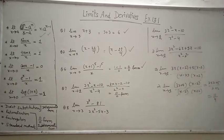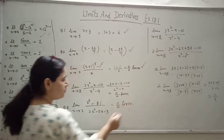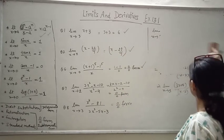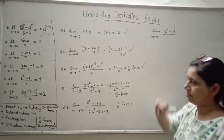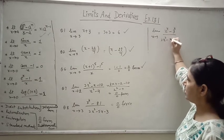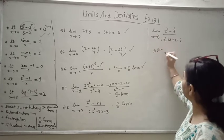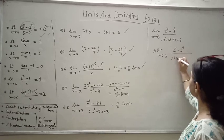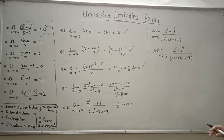Now come to question 8 of Exercise 13.1. Putting x equal to 3 gives 0/0 form. Looking at the numerator, x raised to power 4 minus 81, and 81 is 3 raised to power 4. The denominator is 2x² - 6x + x - 3 = 2x(x-3) + (x-3) = (2x+1)(x-3). So we have (x⁴ - 3⁴) divided by (2x+1)(x-3).